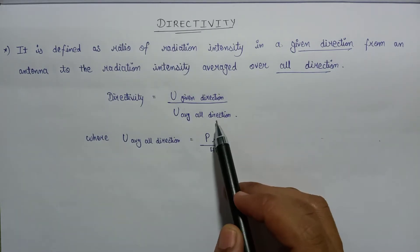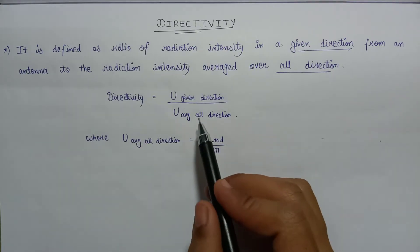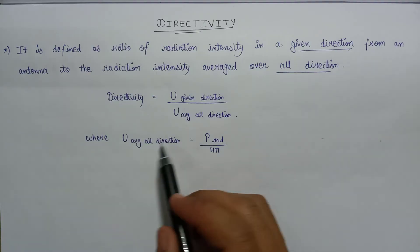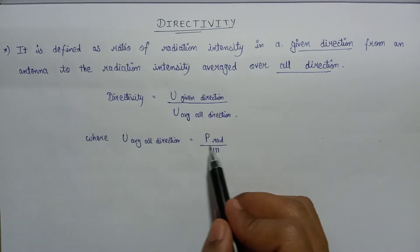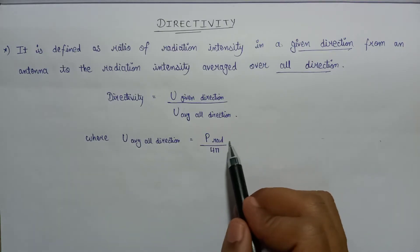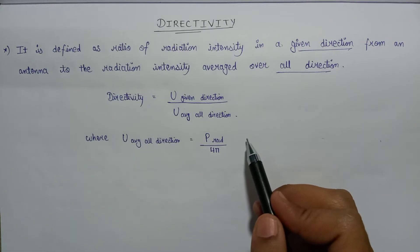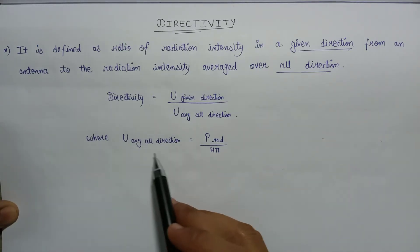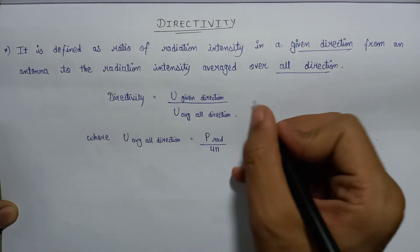If we talk about the radiation intensity averaged over all directions, its symbolic representation is given as P_radiated over 4π, where P_radiated is the total power radiated by an antenna. Substituting this value of U_average into equation number 1 gives us a modified formula for directivity.